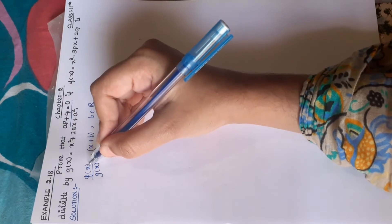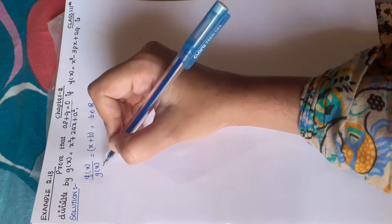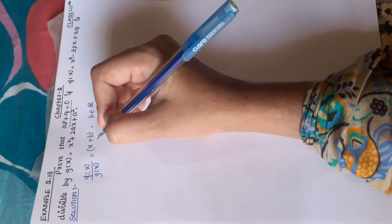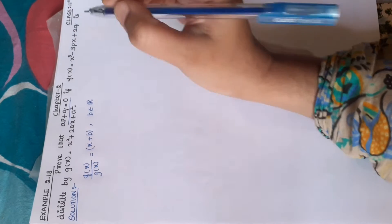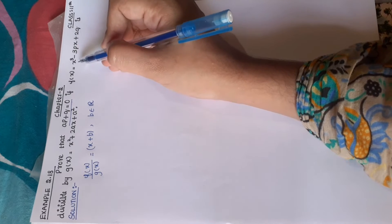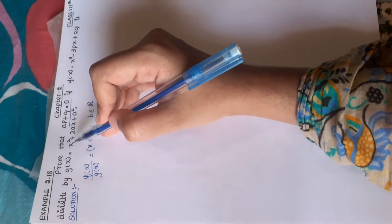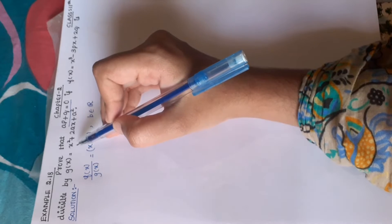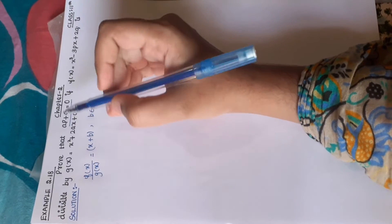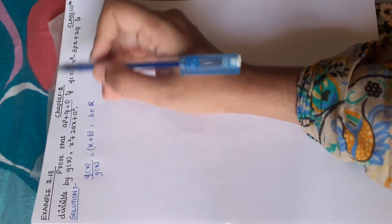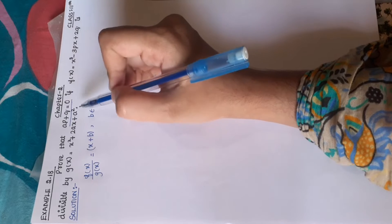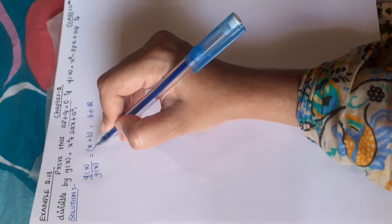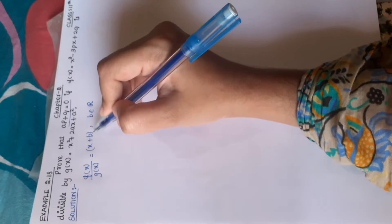Since f of x is divisible by g of x, the remainder is zero, so g of x is a factor. f of x is a cubic polynomial and g of x is a quadratic polynomial — degree 3 and degree 2. So if we divide, the quotient will be a linear factor, giving us an x term and a constant term.